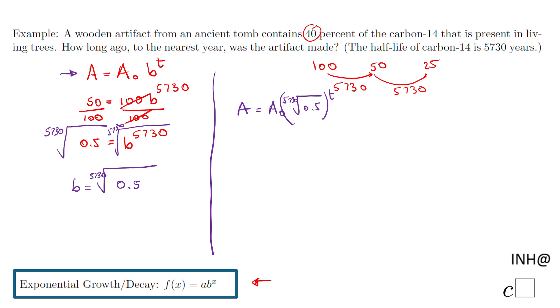Now we look at this 40%. 40% in decimal form is 0.4, right? So that's what we have here: 0.4 of the initial quantity equals A₀ times this radical to the power of t.